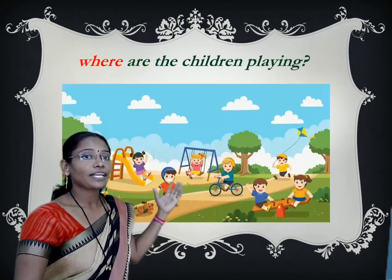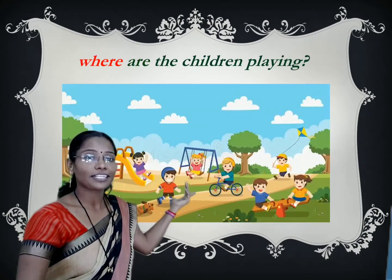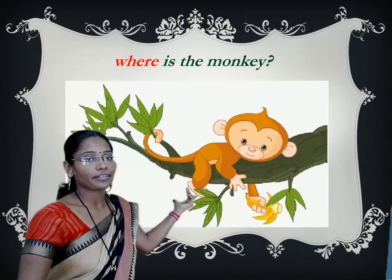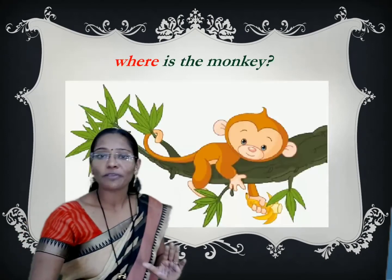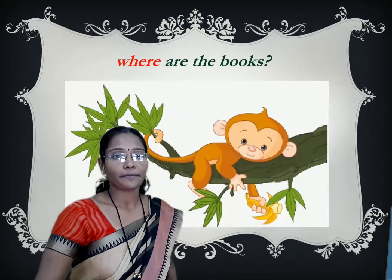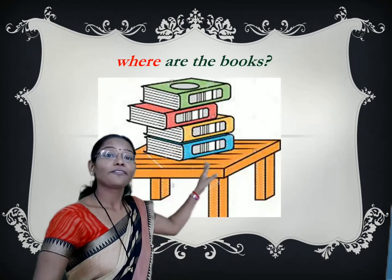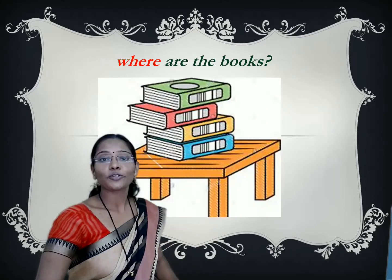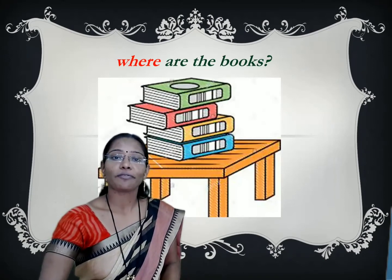Next, 'where are the children playing?' Here also we want to know the place where children are playing, so we use the question word 'where'. 'Where is the monkey?' — here also we want to know the place of the monkey, so we use 'where'. 'Where are the books?' — this is a thing, but we want to know the place of this thing, so to ask about the place of things we can use the question word 'where'.